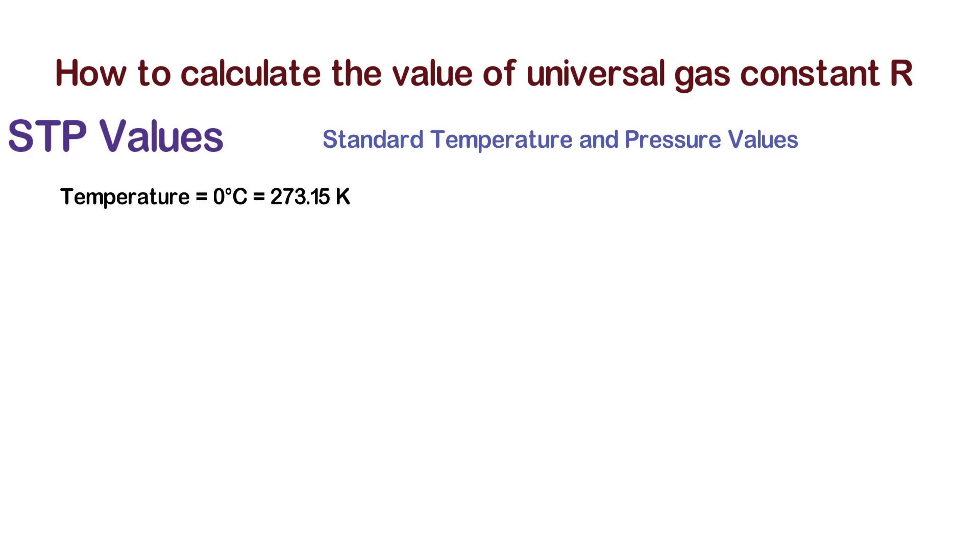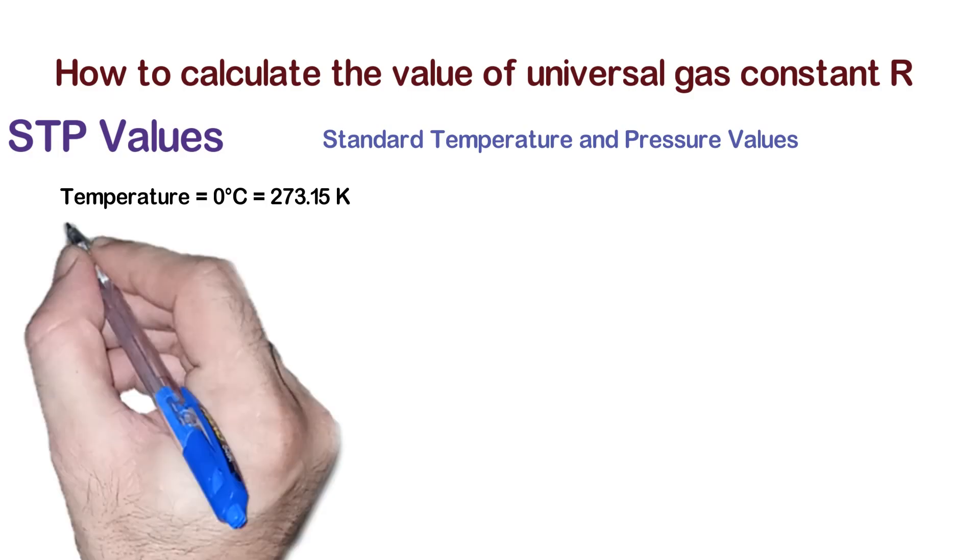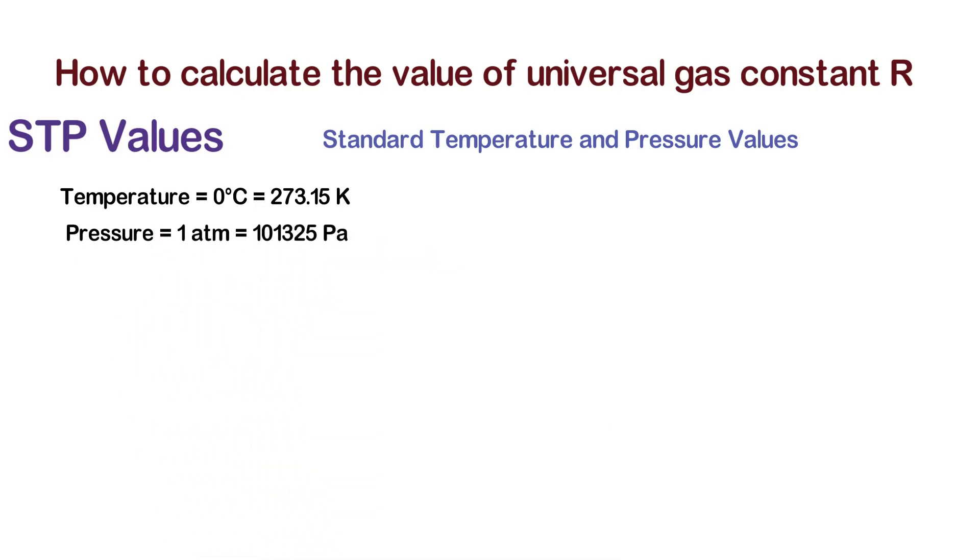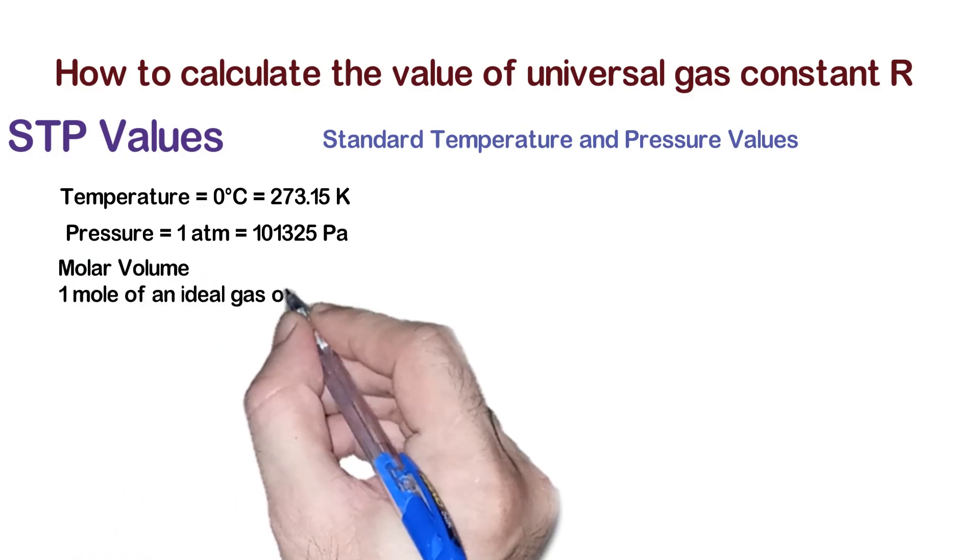The STP value for temperature is 0°C, which equals 273.15 K. The value for standard pressure is 1 atm or 1 atmospheric pressure, and this value in pascals is equal to 101,325 Pa.